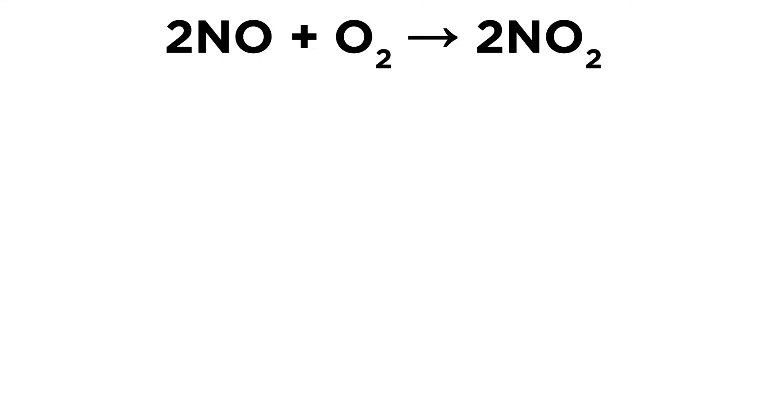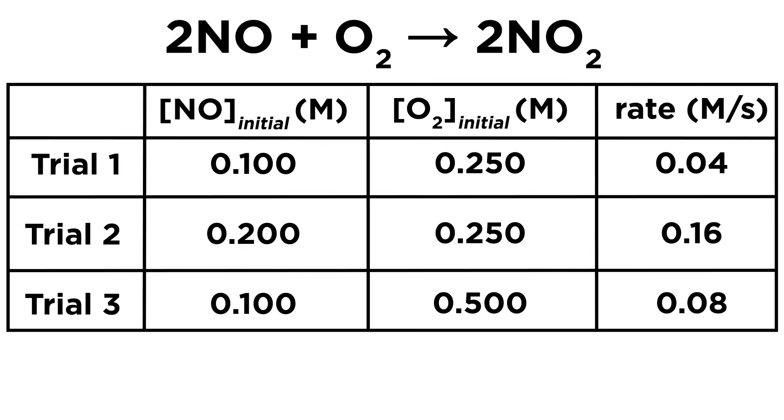So let's look at some sample data and try to decipher the reaction order for each substance. For this reaction, let's perform trials where one substance's concentration stays the same but the other one changes.